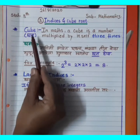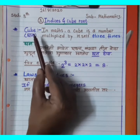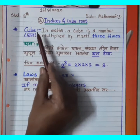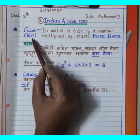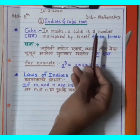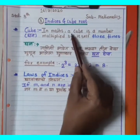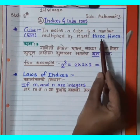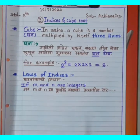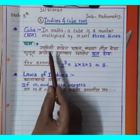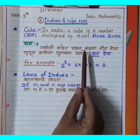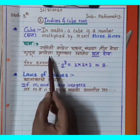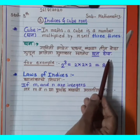Look at this. Write down the definition of cube. In math, a cube is a number multiplied by itself three times. In mathematical language (Marathi: tar ganiti bhashe madhe), a number multiplied three times gives the cube — that product is called the cube (ghanav).